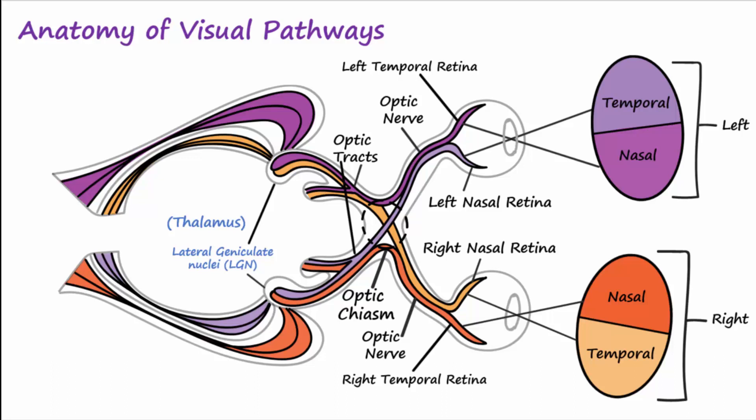Notice that collateral axons of the optic tract also extend to the superior colliculi in the midbrain. The superior colliculi are very important for visual reflexes and cause the eyes and neck to turn toward a visual stimulus, such as bright lights in your peripheral vision while driving at night, or when tracking moving objects.